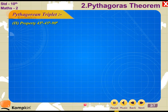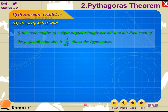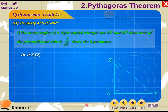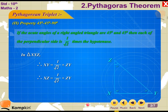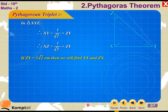Property 2 — 45-45-90 Triangle: If the acute angles of a right-angled triangle are 45° and 45°, then each of the perpendicular sides is (1/√2) times the hypotenuse. In triangle XYZ, XY = (1/√2) × ZY and XZ = (1/√2) × ZY. If ZY = 3√2 cm, then XY = XZ = (1/√2) × 3√2 = 3 cm.